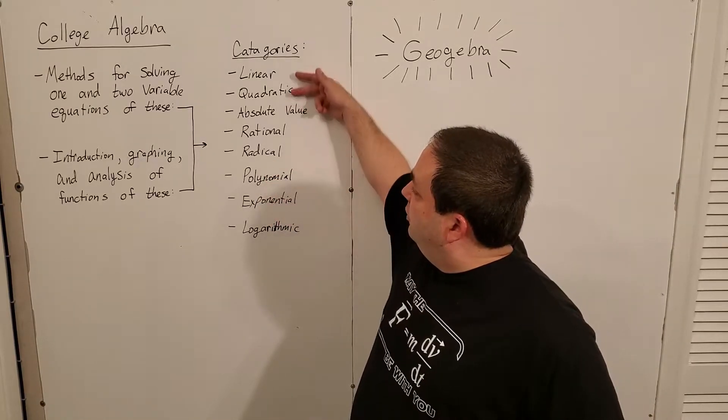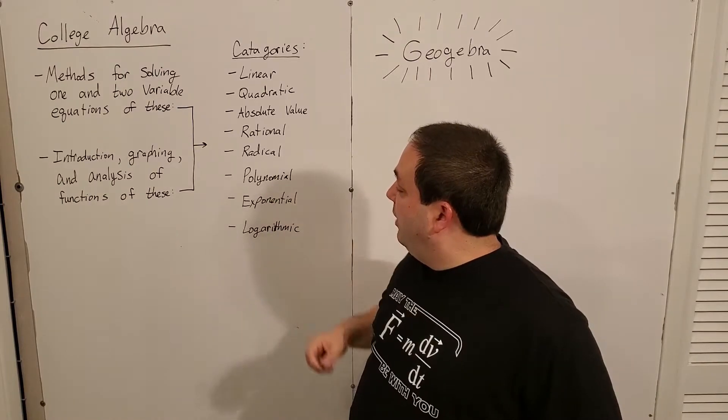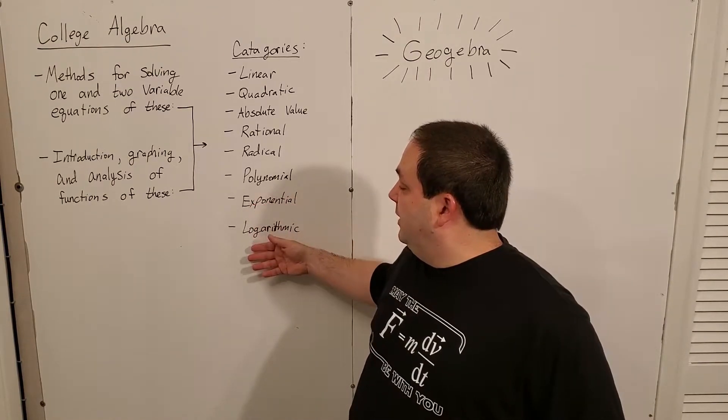Polynomial is a generic version of the linear and quadratic because it's just higher powers. And then, of course, you have exponential and logarithmic.